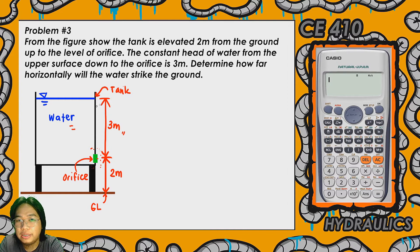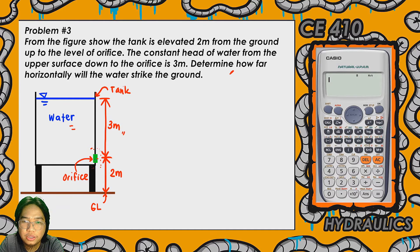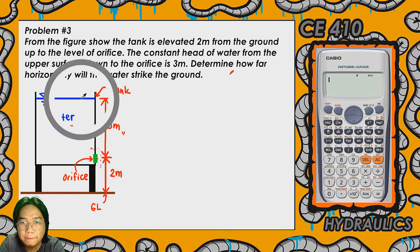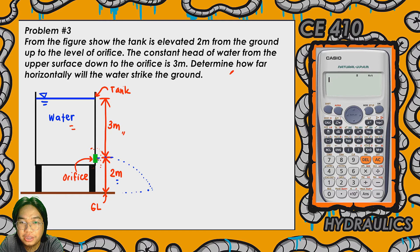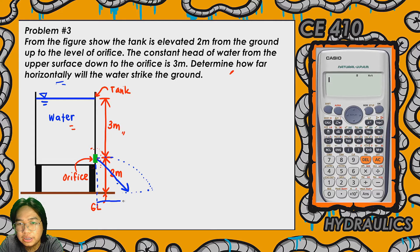Our problem is to determine how far horizontally the water will travel. Since the orifice is elevated 2 meters above the ground, water will follow a trajectory — it will not fall straight down but travel in a parabolic path. We need to determine the horizontal distance from the orifice to where the water will strike the ground, and we'll denote that as x.